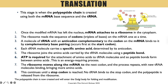Each tRNA molecule brings a specific amino acid. Those amino acids are joined together by peptide bonds, and the formation of those peptide bonds requires energy from ATP. ATP is also required for the attachment of specific amino acids onto the tRNA molecule. Once peptide bonds have formed, the tRNA is released and the ribosome moves along the mRNA to the next codon. The process repeats with new tRNA molecules bringing new amino acids, continuing until a stop codon is reached.